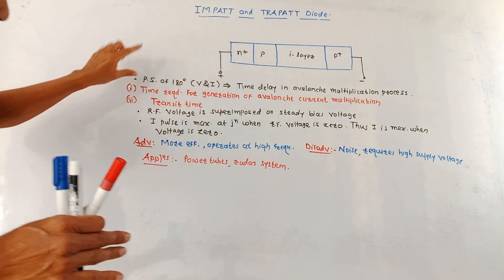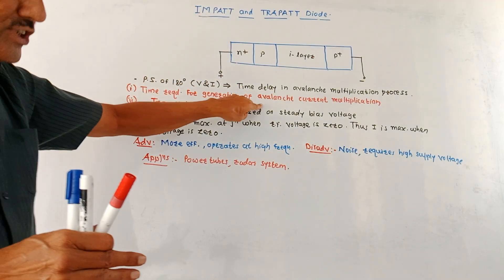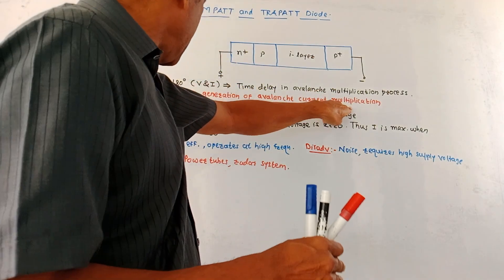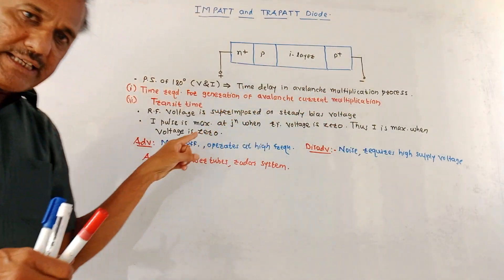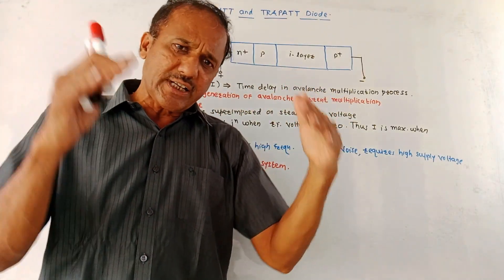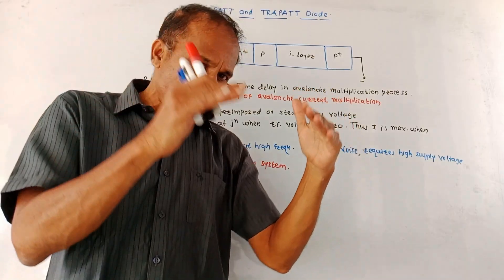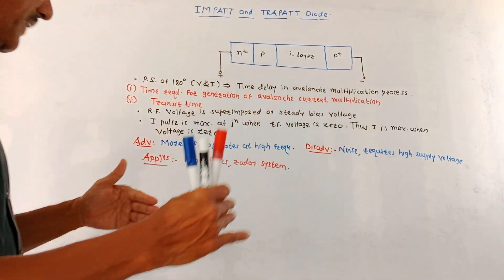Now the time delay is combination of the time required for generation of avalanche current multiplication and second is the transit time. Transit time is the time required for the charge carriers to pass through the drift space.